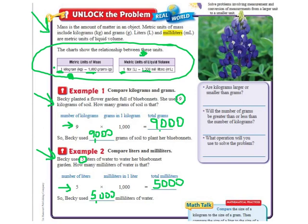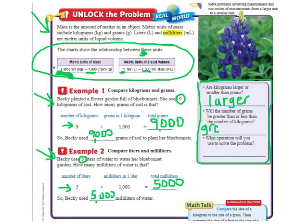Let's go over this to get an idea in our head of what these things mean. Are kilograms larger or smaller than grams? Well, we look at our chart over here — one big kilogram is equal to 1,000 grams, so it would take 1,000 grams to equal up to 1 kilogram. So kilograms are larger than grams. Will the number of grams be greater than or less than the number of kilograms? Greater than — you're going to have to have more grams to equal up to the kilograms. And what operation will you use to solve the problem? We're multiplying.